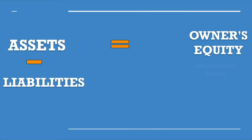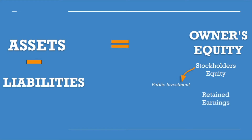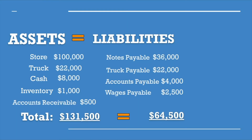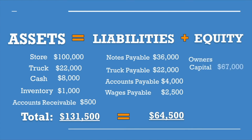Some examples of owner's equity are stockholders' equity — you can think of it as public investment, someone investing in the company. We also have retained earnings, which you can think of as a savings account — it's what they retain from year to year from their earnings. If you want to learn more about retained earnings, I have another whole video on that. For our example, we're not a public company, so we wouldn't have stockholders' equity or retained earnings. We have something called owner's capital, which is for smaller businesses. Let's plug in our owner's capital.